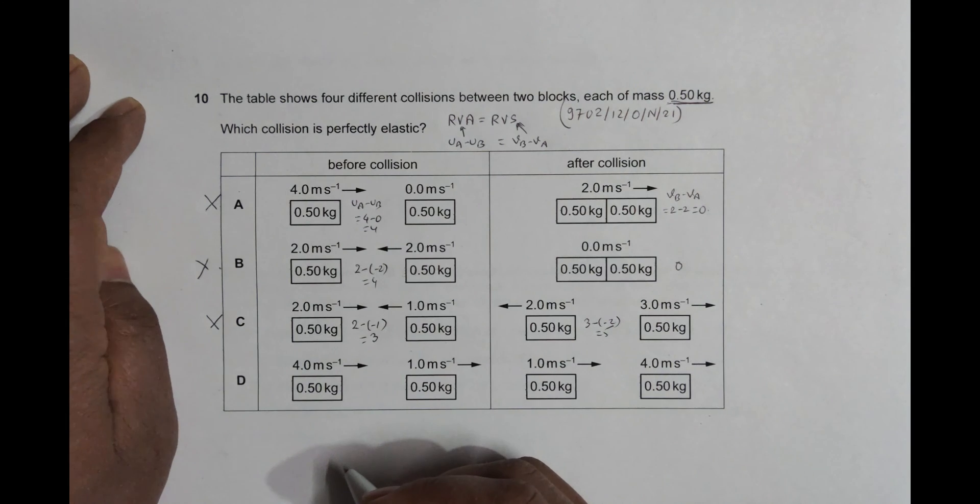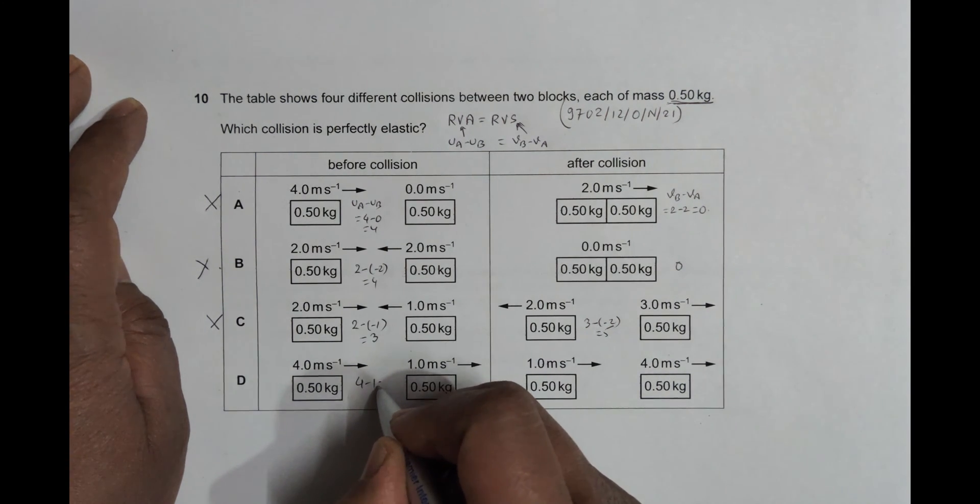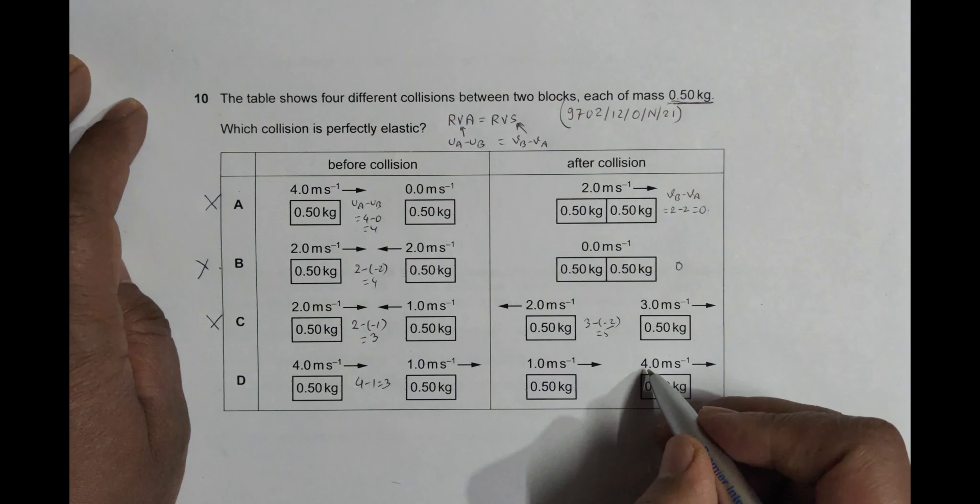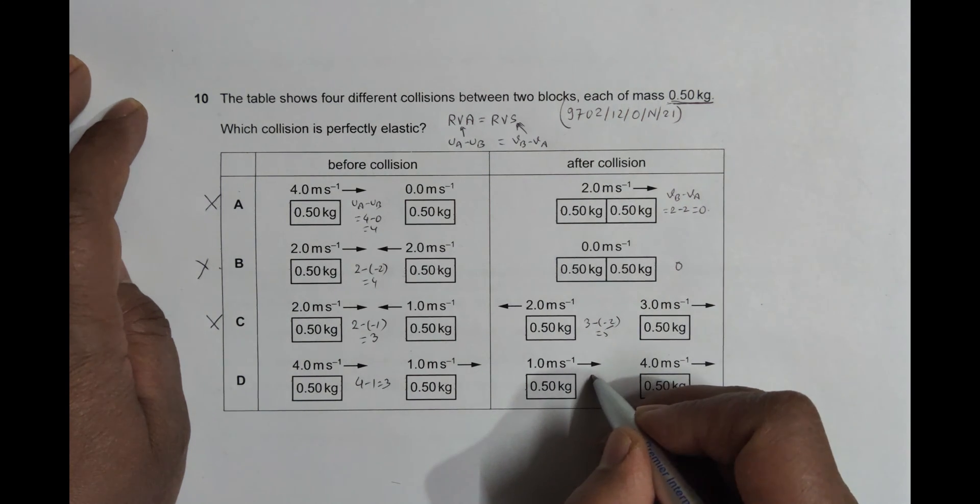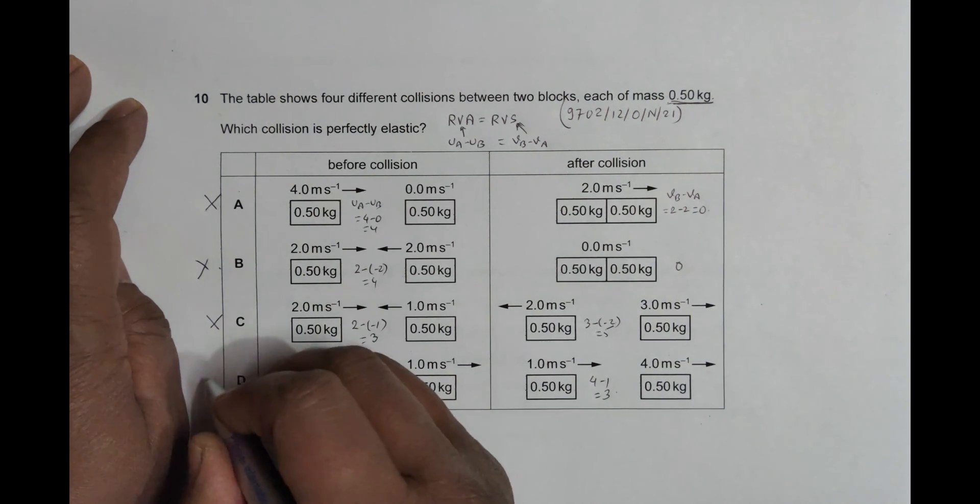So the fourth one: it is 4 minus 1, equal to 3, and here v_b first is 4 minus 1, which again equals 3. So these two are equal, so that's why this qualifies as an elastic collision.